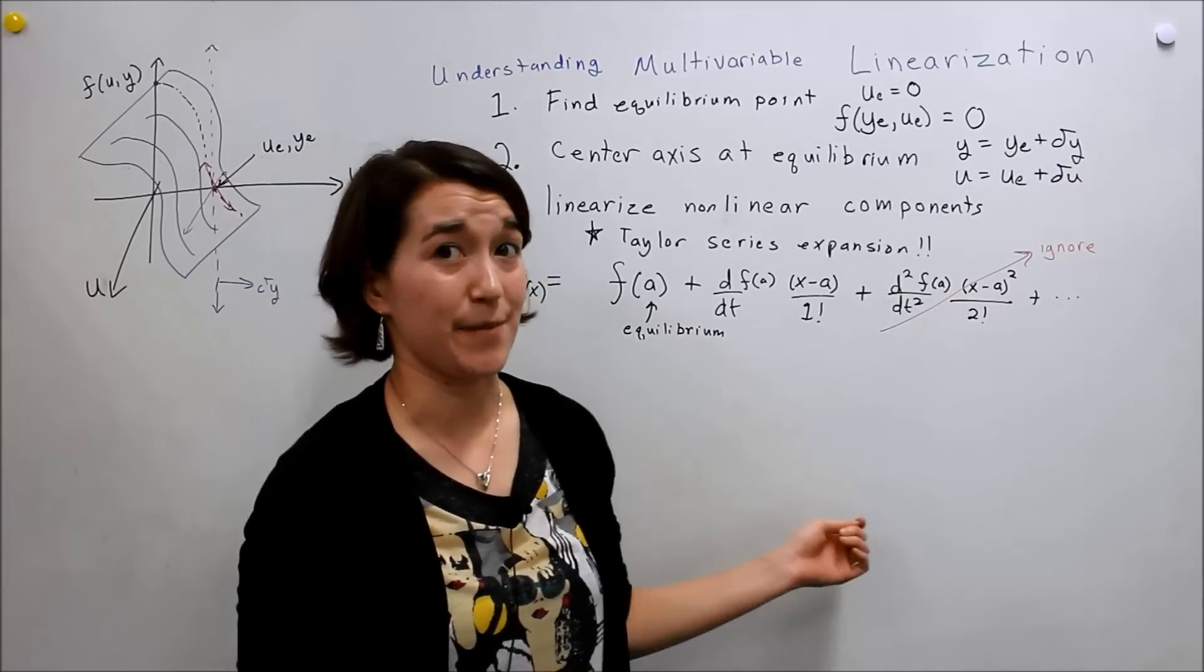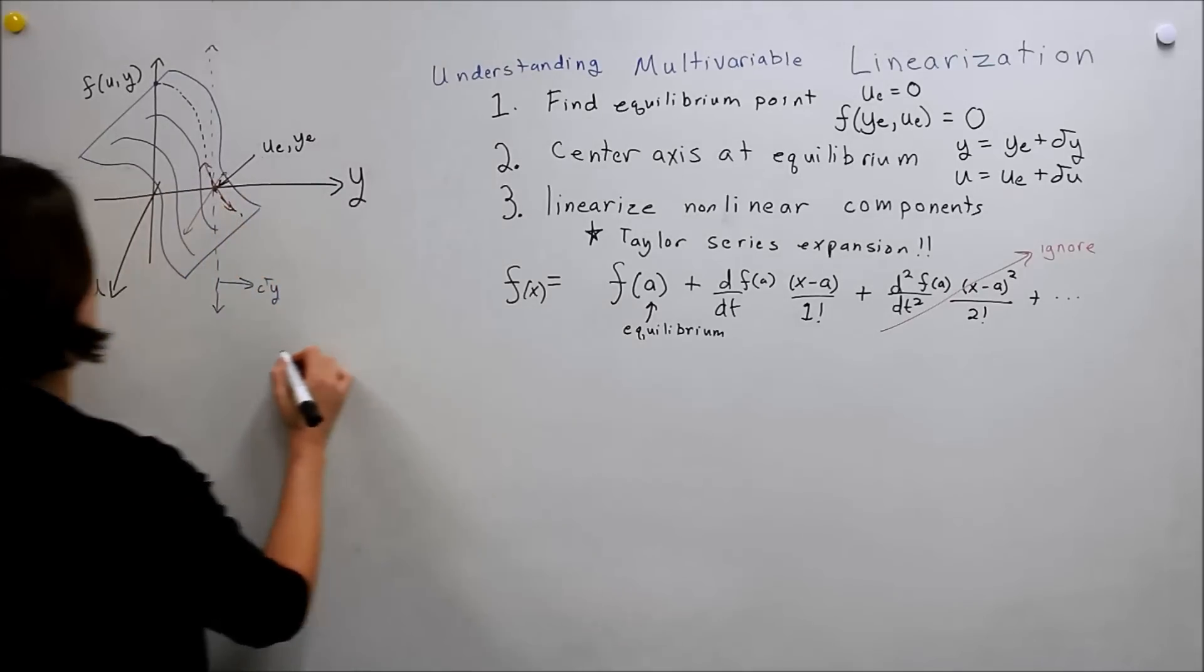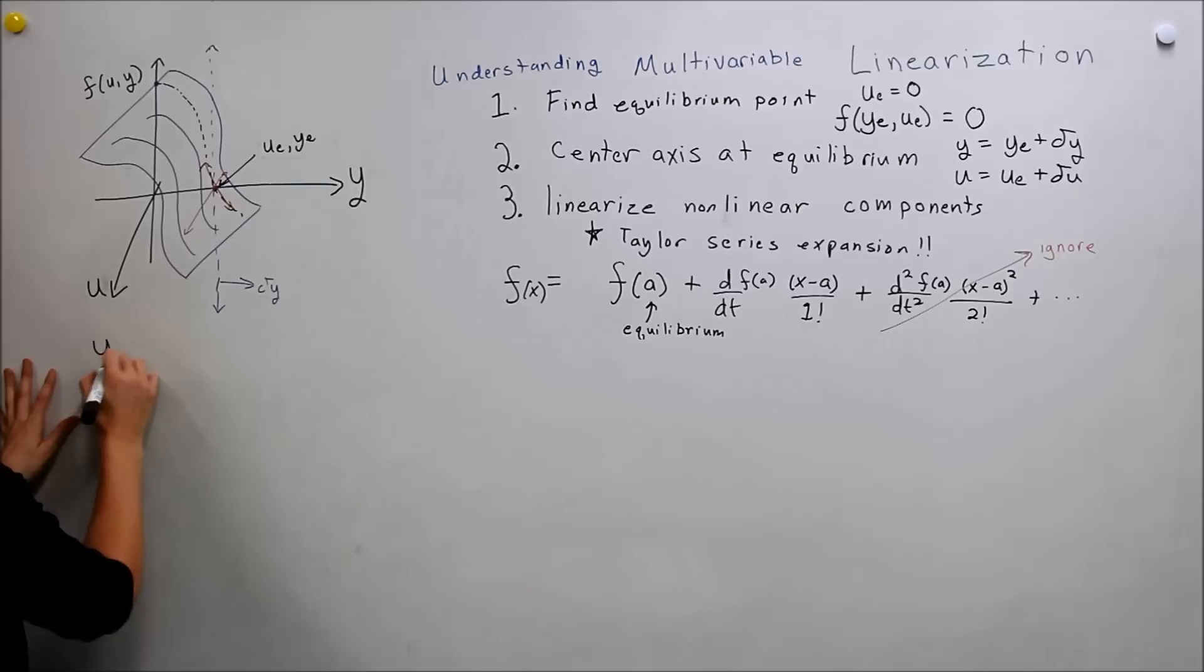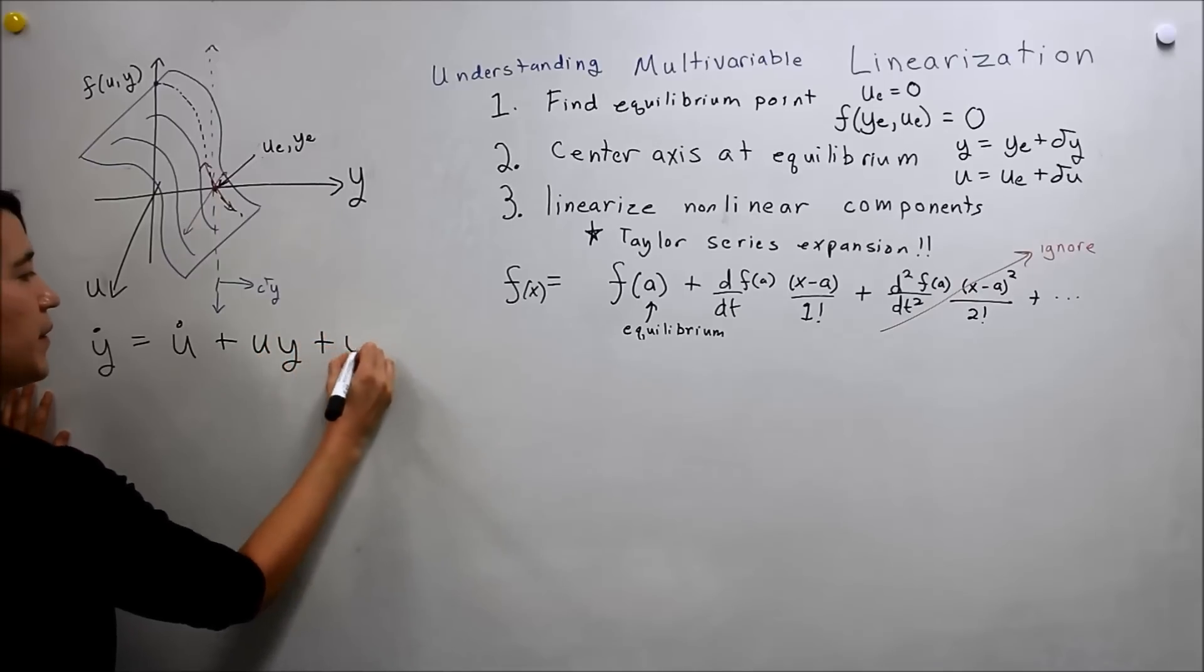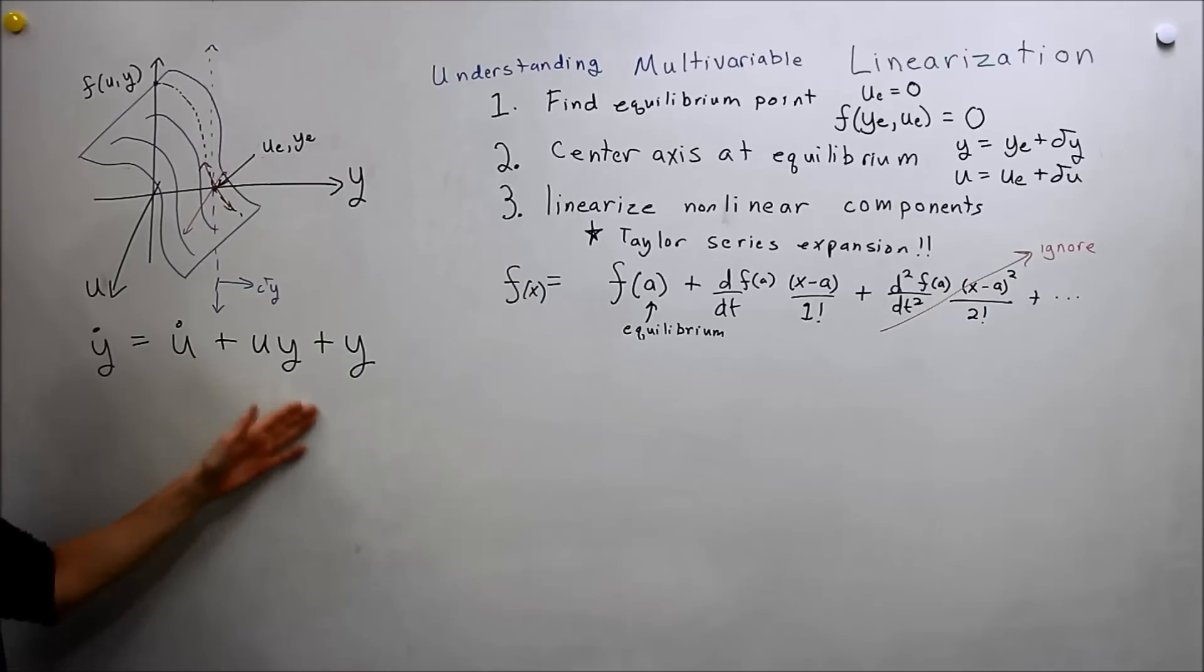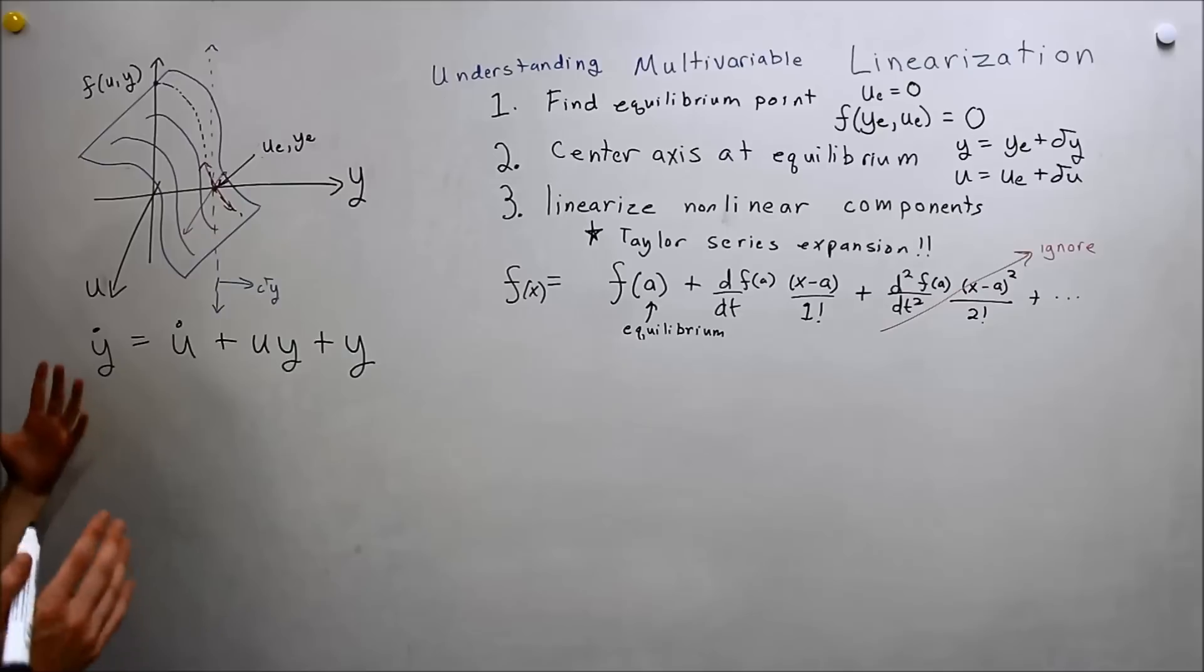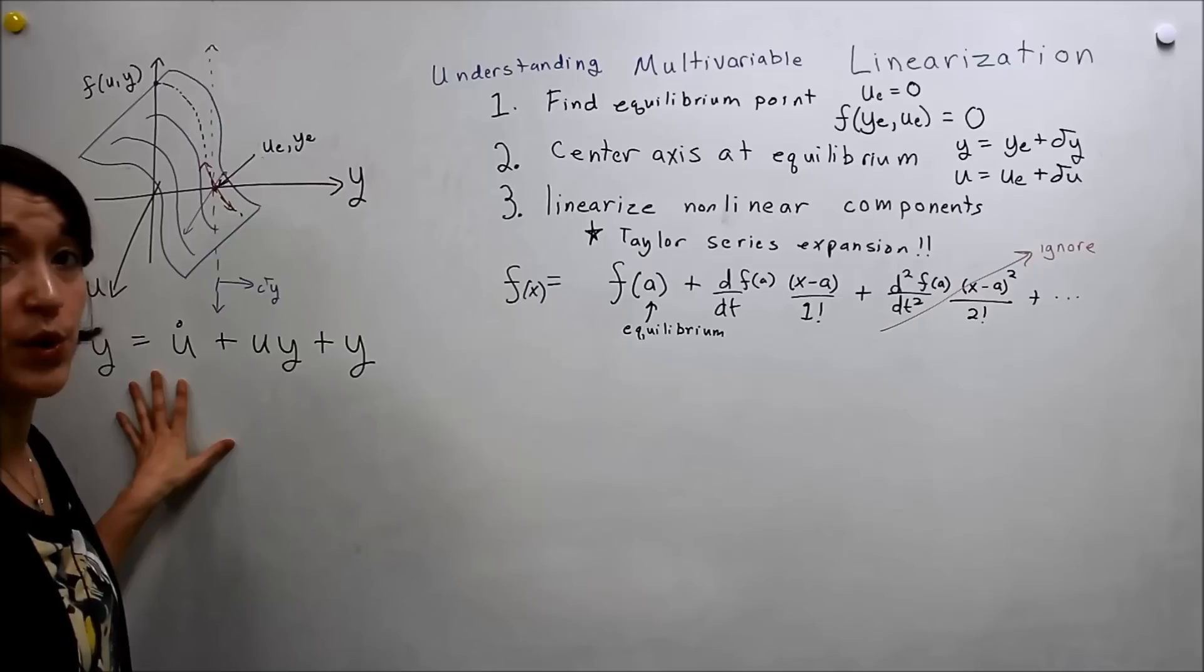So let's take an example. We're going to do a multivariable example using, right over here, y dot derivative of y equals derivative of u, our input, and plus u y plus y. So we see immediately that this is a nonlinear function. We have some u y's in here. And we need to linearize this system around the equilibrium point.